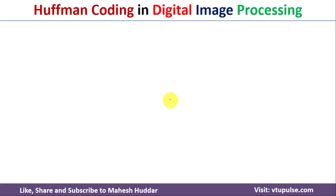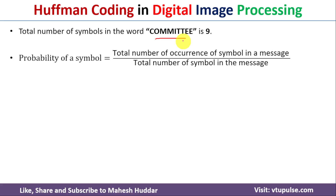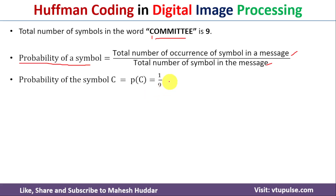To understand Huffman coding, we use the word 'committee,' which has nine symbols. For each symbol, we need to find the probability. The formula is: probability of a symbol equals the total number of occurrences of the symbol in the message divided by the total number of symbols in the message. Here we can see that the letter C appears only once, so the probability of symbol C equals 1 divided by 9.